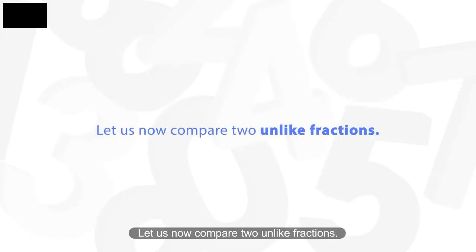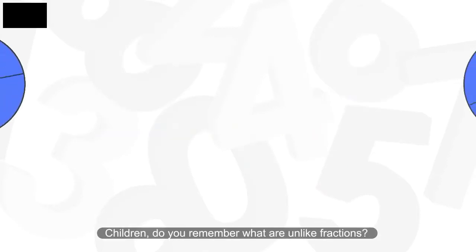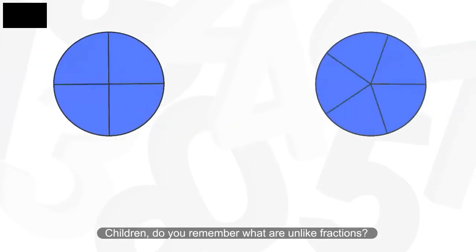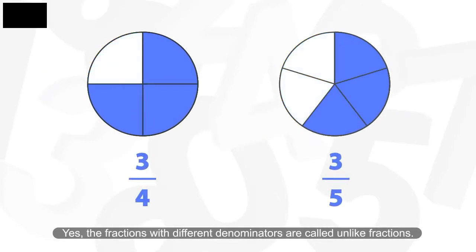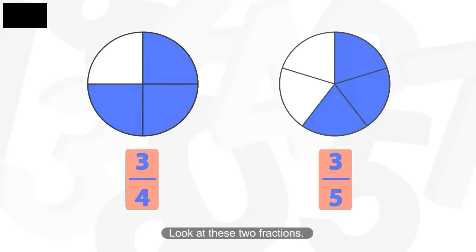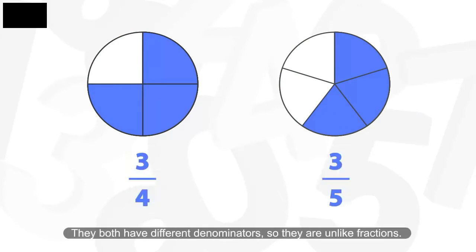Let us now compare two unlike fractions. Children, do you remember what are unlike fractions? Yes, the fractions with different denominators are called unlike fractions. Look at these two fractions. They both have different denominators, so they are unlike fractions.